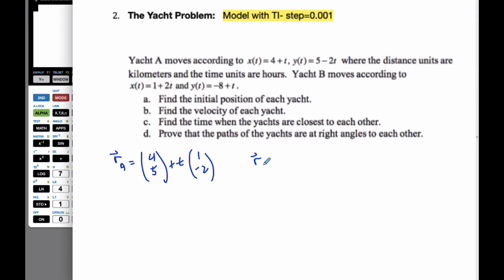And then for yacht B, similarly, it's going to be (1, -8) plus T times (2, 1). And so the initial position of yacht A is going to be at (4, 5) and yacht B is going to be at (1, -8).